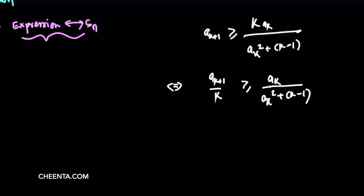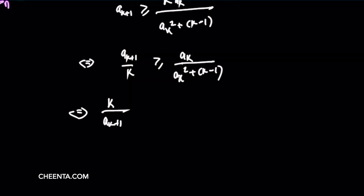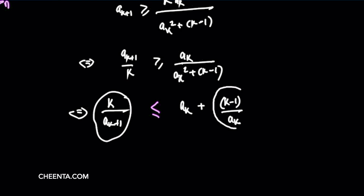If we somehow bring the k − 1 term over, that would be very helpful. The natural step is to invert the whole thing. So we take a_k² + k − 1 over k·a_k, giving us a_k/k + (k−1)/(k·a_k). If we name this expression c_k, then the other term is c_{k−1}. So c_{k+1} ≤ a_k + c_k — very interesting! We can see a beautiful pattern emerging with two similar-type terms appearing.